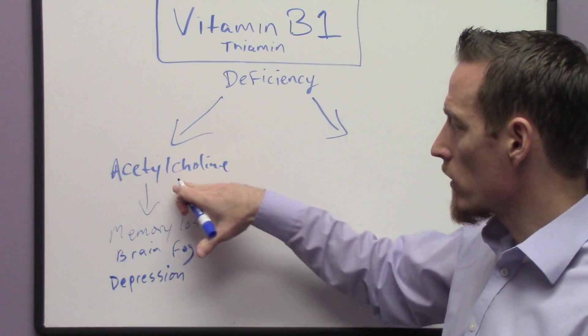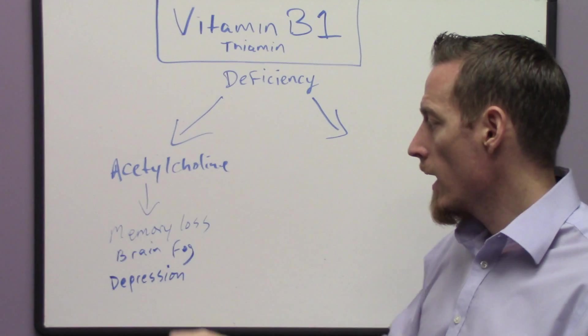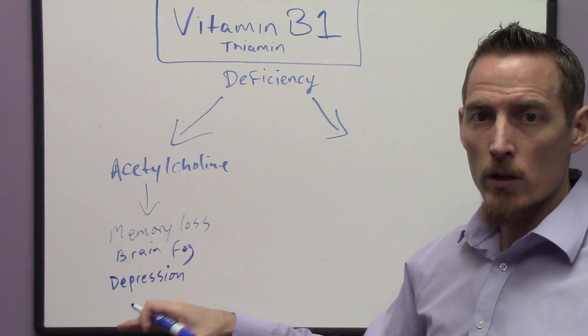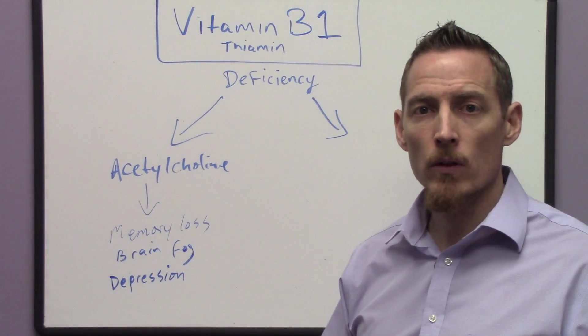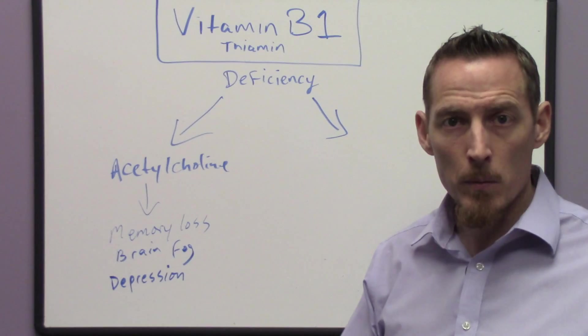So we get these neurological parameters, acetylcholine is a nervous chemical, and so memory loss, brain fog, and depression can all occur as a result of B1 deficiency, vitamin B1 deficiency.